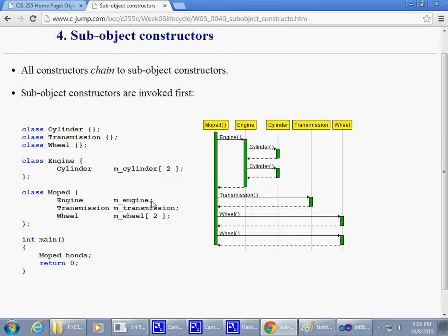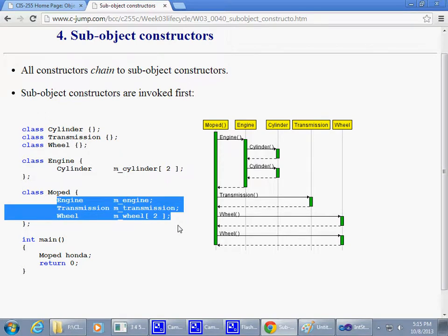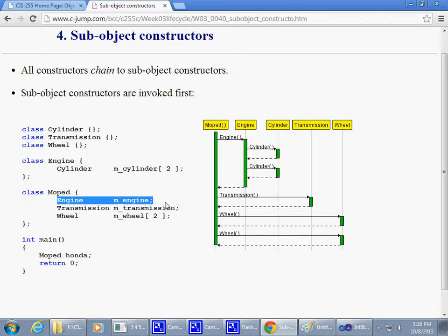So, by the way, this makes it very important as a decision on our part, how to sequence data elements inside of our classes. Because if you put engine down here, below the wheel construction, its constructor will be invoked down here after transmission and wheels are constructed. But because we said we want this to be the top level member of our class, its constructor is executed first.